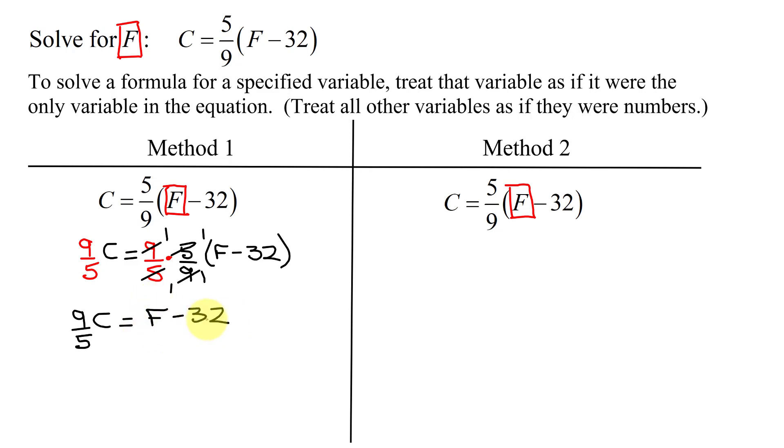Now, to get F all by itself, all I have to do is add 32 to both sides of this equation. Unlike terms on the left-hand side, so I have 9 fifths C plus 32 equals F. So I have solved this formula for F.